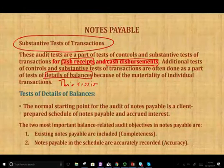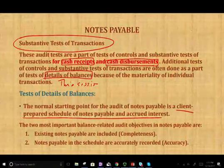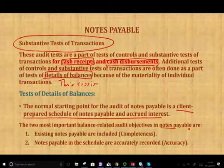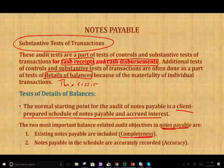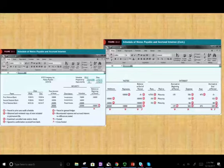So how do we start with the test of detailed balances? We start by obtaining a client-prepared schedule of notes payable and accrued interest, which we'll see in a moment. And we have to keep in mind two things. The most important thing when it comes to notes payable is the completeness assertion. The existing payable are included. We included all of them. Nothing is off balance sheet. Nothing is hidden. And notes payable in the schedule are accurately recorded. The accuracy is important.